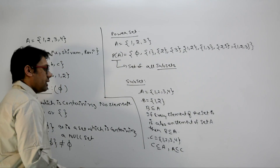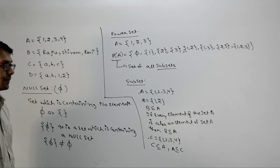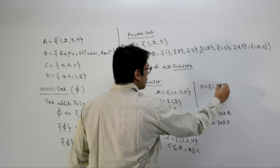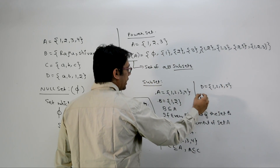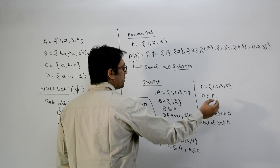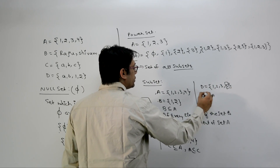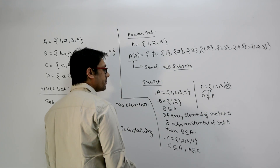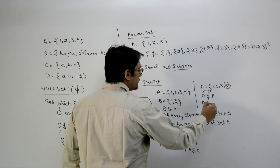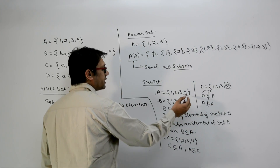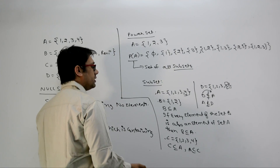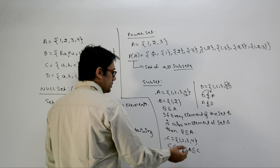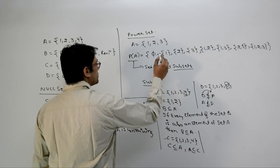Now if set D contains 1, 2, 3, 5, we cannot say D is a subset of A because D contains the element 5, which is not in A. Similarly, A is not a subset of D because A contains the element 4, which is not present in D.